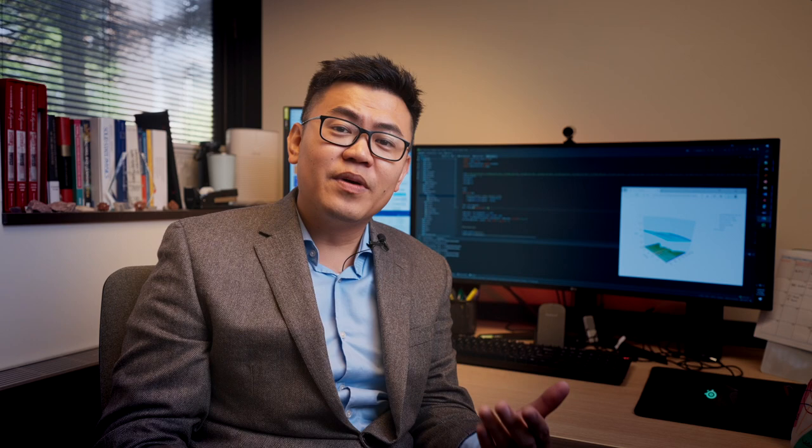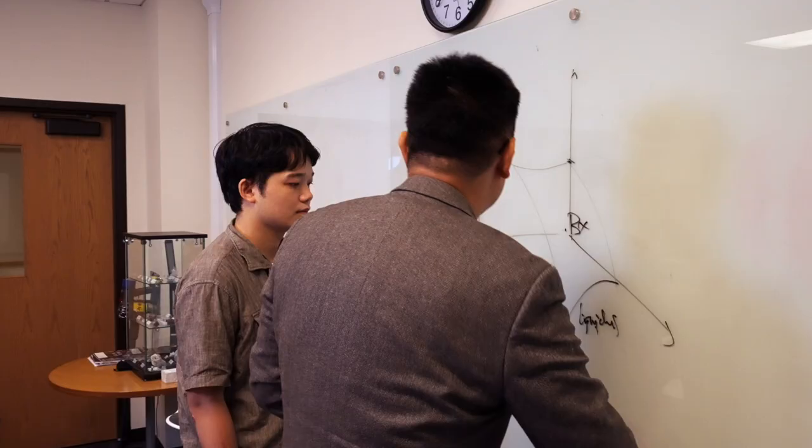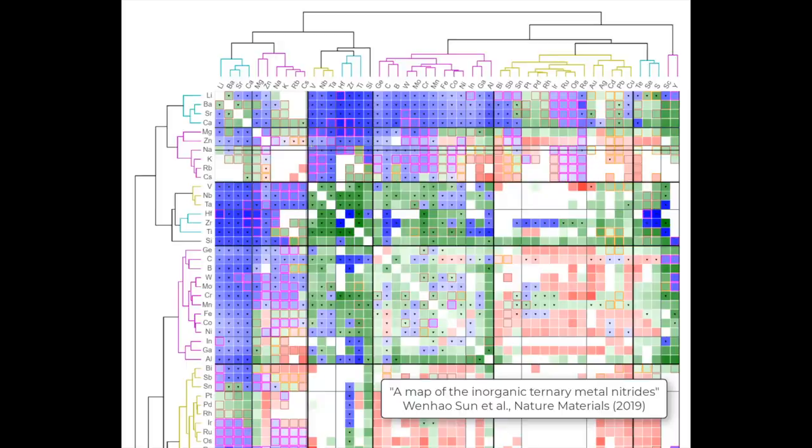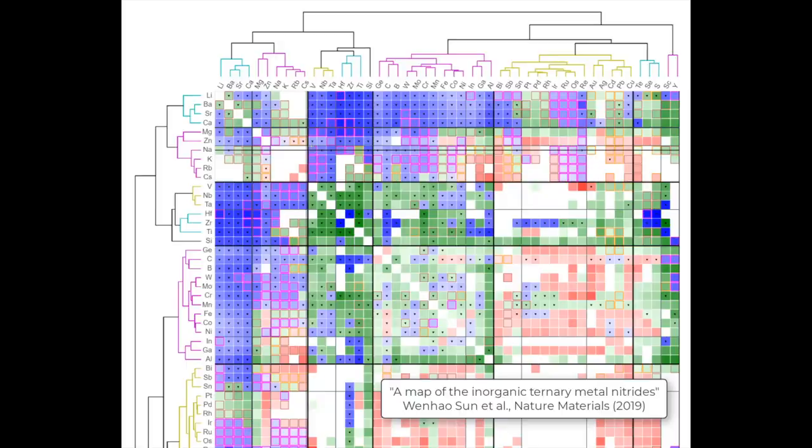When we talk about developing predictive theories of material synthesis, there are really two categories we go for. The first one is understanding exploratory synthesis. In exploratory synthesis, we survey huge chemical spaces for new stable materials. We do this using high-throughput DFT computations, and then we use materials informatics methods to construct large stability maps that give us a sense of which regions of chemical space are stable, which regions are metastable, and which regions might be unstable.